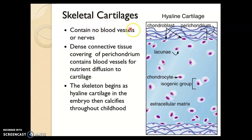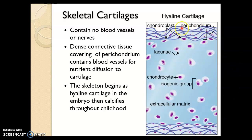Skeletal cartilage contains no blood vessels and no nerves. So the cartilage cells, which are called chondrocytes — chondro means cartilage, cyte means cells — must get their nourishment through diffusion. Blood vessels exist in the membrane that surrounds the cartilage, which is called the perichondrium. Peri means surrounding. Nutrients from the blood vessels in the perichondrium can diffuse into the cartilage to nourish the chondrocytes.